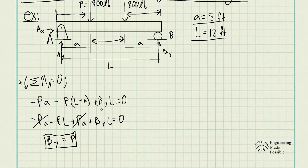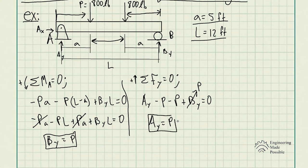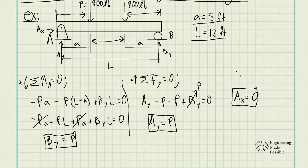Now for the other support reactions: sum of forces in the Y direction gives A_Y minus P minus P plus B_Y equals zero. Since B_Y equals P, one of the P's cancels, and A_Y equals P. There are no other external forces along the X direction, so the sum of forces in X equals zero, meaning A_X equals zero. Now that we have the support reactions, let's do the equations for each segment starting from the left-hand side.